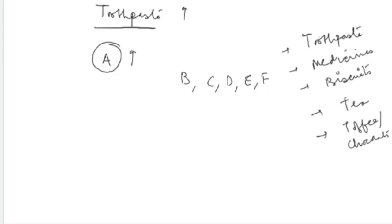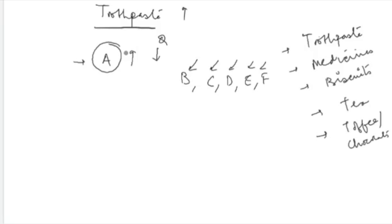If you increase the price of your commodity, and you believe that your revenue will automatically increase, that is a wrong thought — a misconception that can arise without a fair knowledge of economics. The truth is that any consumer can switch to company B, C, D, E, or F who are supplying the same commodity at a lower price. Your increase in price will result in a reduction in quantity demanded, and that reduction can be so large that your total revenue actually decreases.